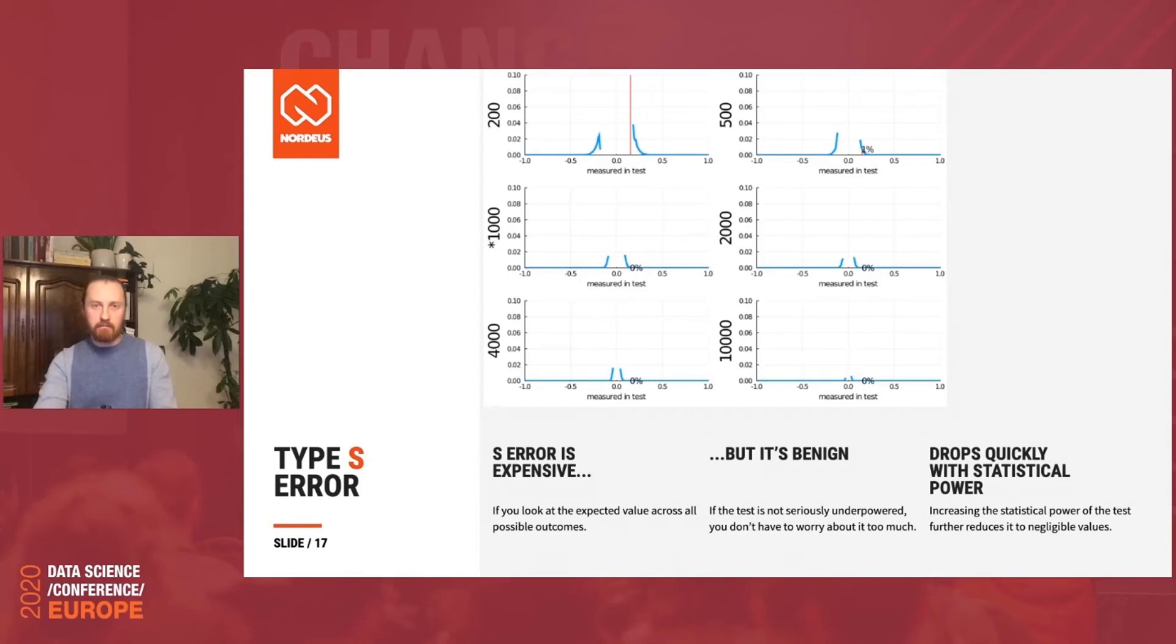Another new thing is S error, or sign error, and it's actually the worst kind of error that can happen to you when you're doing A-B tests. It happens when you decide there's a change, but you thought it's a positive change, and instead it's actually a negative change. Luckily, it's mostly benign. If you're not using a seriously underpowered test, if you're at least using default values, the probability is really, really small. Again, it's higher near the decision boundary. And it drops really quickly with statistical power, with the increase of the statistical power.